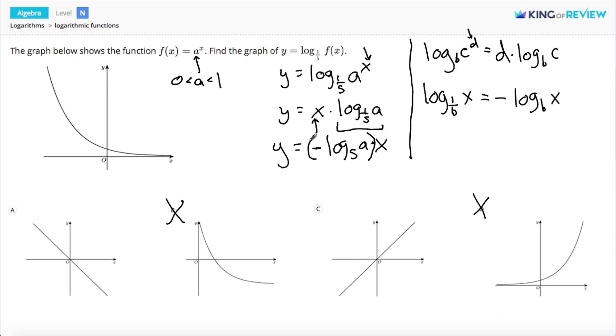But let's remember that we know from the original graph that a is a number between 0 and 1. Which means, if we need to figure out what exponent to raise 5 to in order to give us a, we're going to get a negative number.